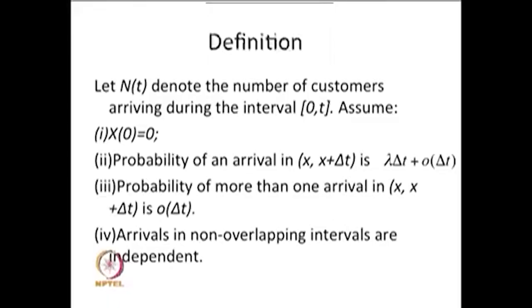We will consider the same example again later. Now I am going to the definition of the Poisson process and how one can derive it. Let me start with the random variable N(t), which denotes the number of customers arriving during the interval 0 to time t. For fixed t, N(t) is a random variable, and the collection of N(t) over time is a stochastic process. I am making four assumptions, and with these assumptions I am going to conclude what N(t) is.